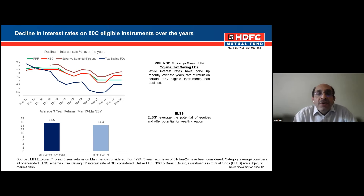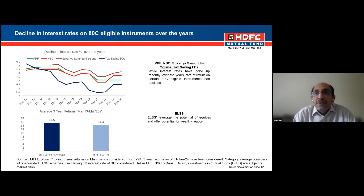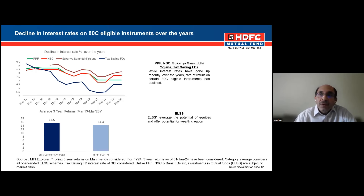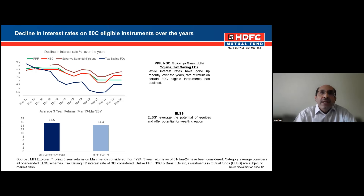As compared to declining fixed instrument yields, if you look at ELSS as a category, the industry as a whole has given an average or category return of 15.5 percent over a period of three years, compared to the Nifty 500 broader benchmark of around 14.4 percent — doing better than the benchmark and much better than traditional tax-saving instruments. That is how you create wealth: generating returns significantly better than inflation over a sustainable period of time.